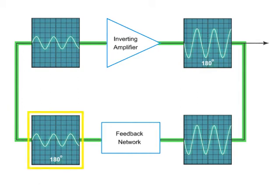Also note that the output of the feedback network is now in phase with the original input of the inverting amplifier. Remember that the feedback network is frequency selective. Therefore, you only get one signal that will arrive back in phase.